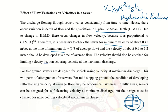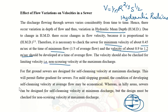At average flow, the velocity should be in the range of 0.9 to 1.2 meters per second. At maximum discharge, the maximum velocity is 2 to 3 meters per second. In the next video, we will see how flow is calculated and how to design a sewer in full condition and partial condition.